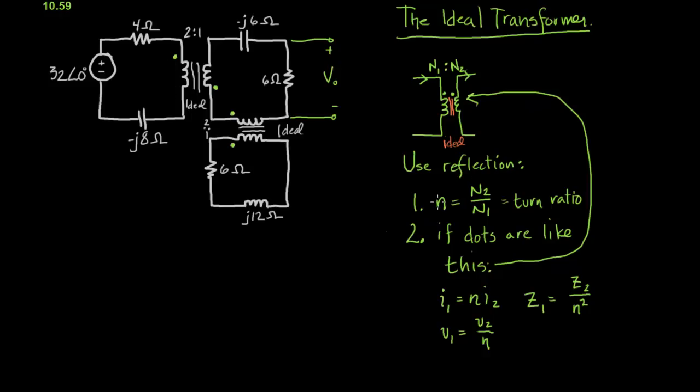So we're going to define n as n2 over n1, and that will be the turn ratio. And then to use reflection, if the dots are both at the top, or I guess both at the bottom,